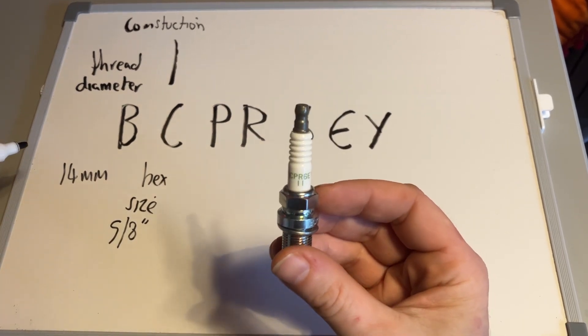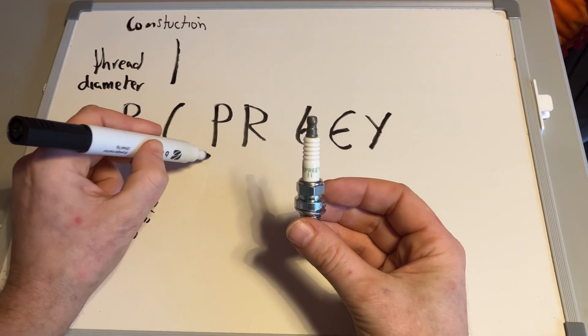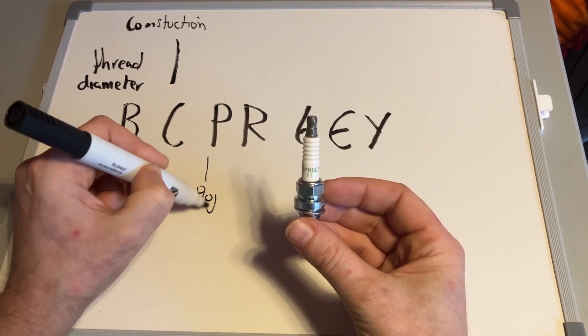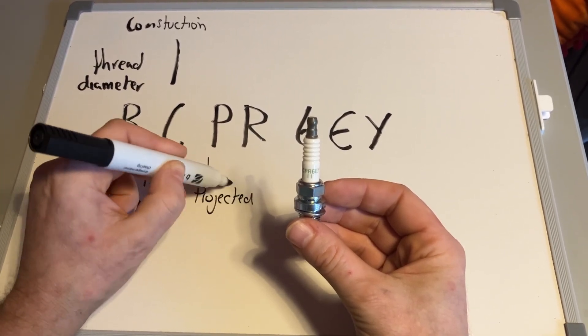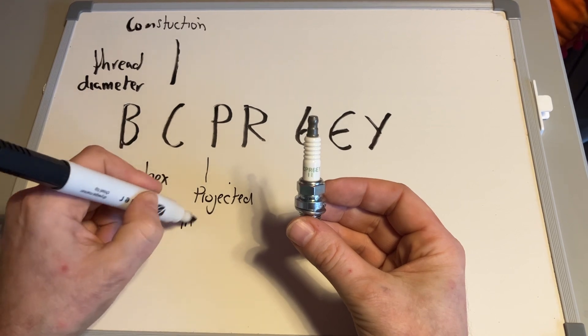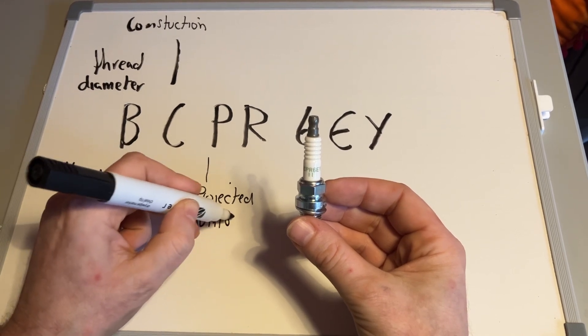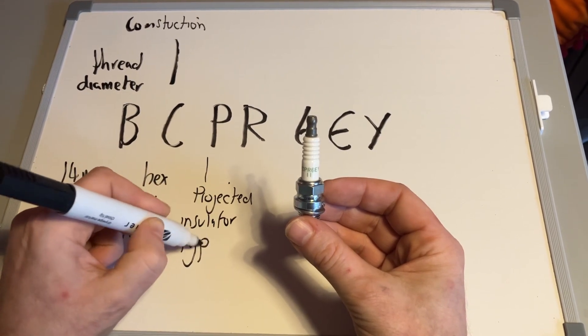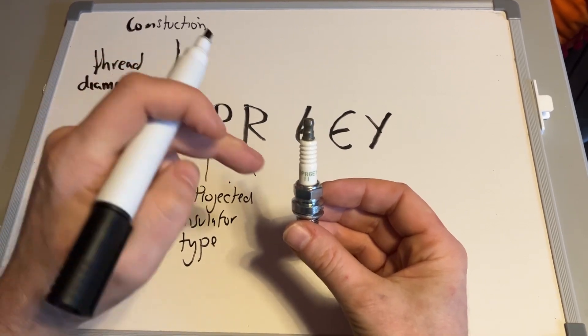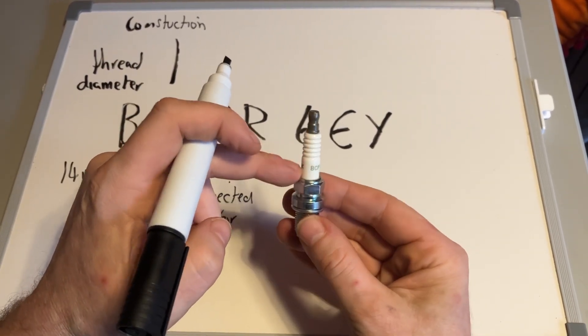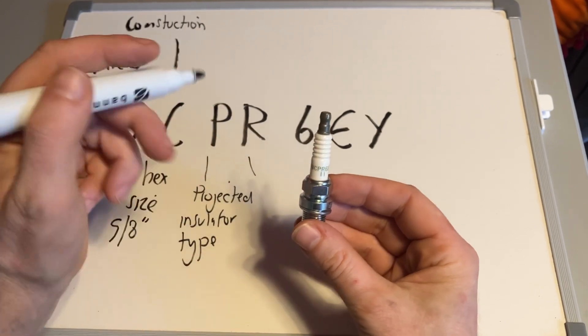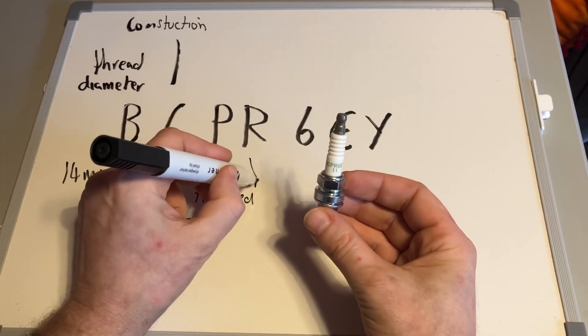that the spark plug operates. The P section stands for projected insulator type, and the R stands for resistor. That's how it works. The ceramics here is the resistor that should never be cracked, otherwise you may get a misfire.